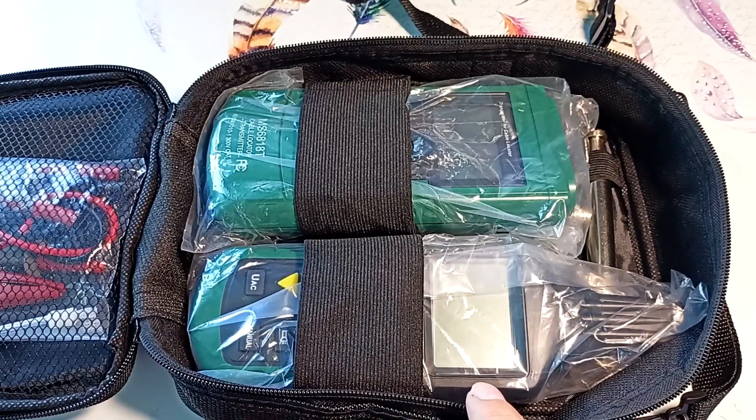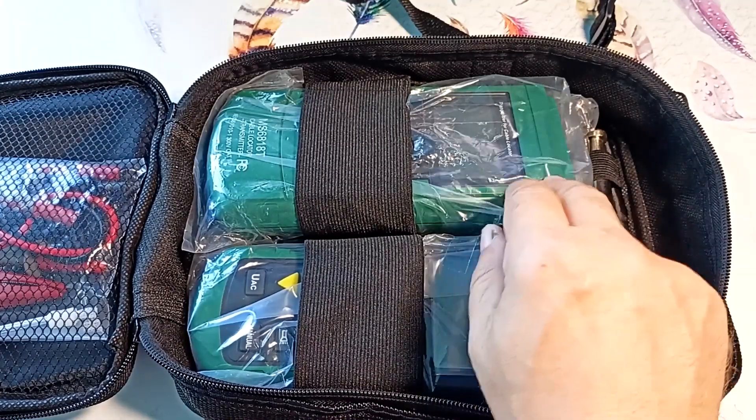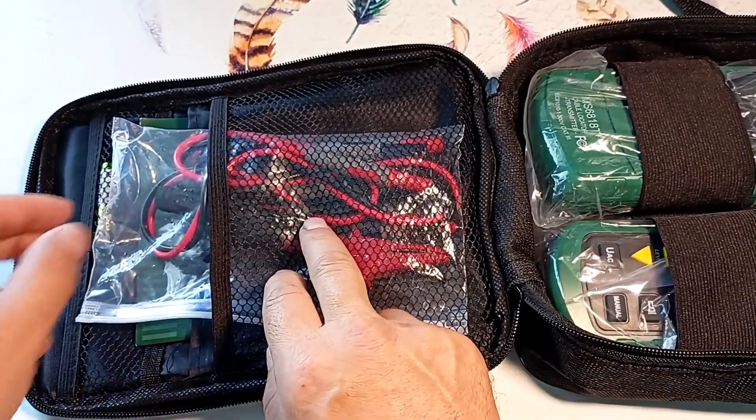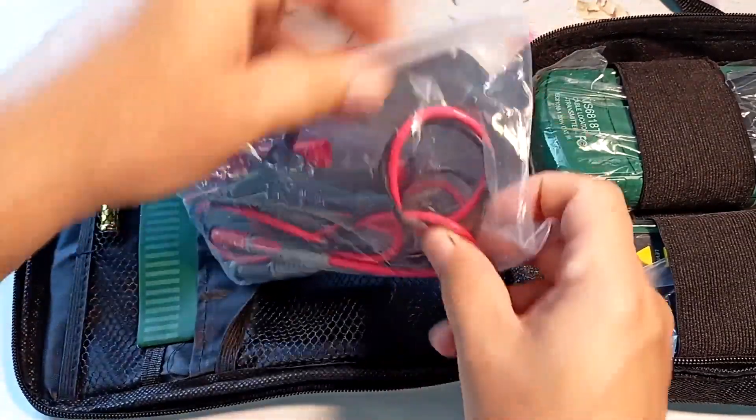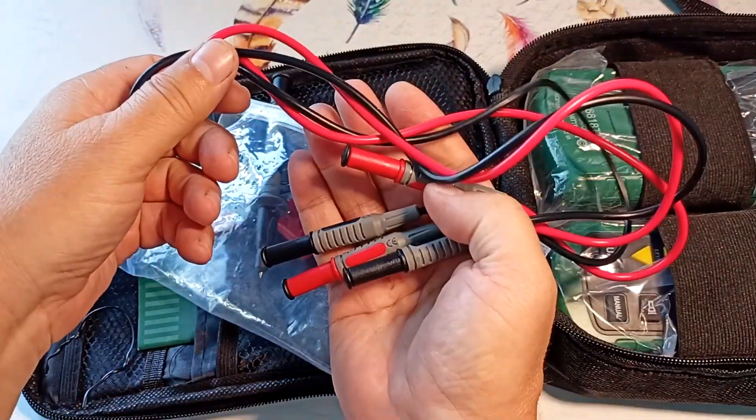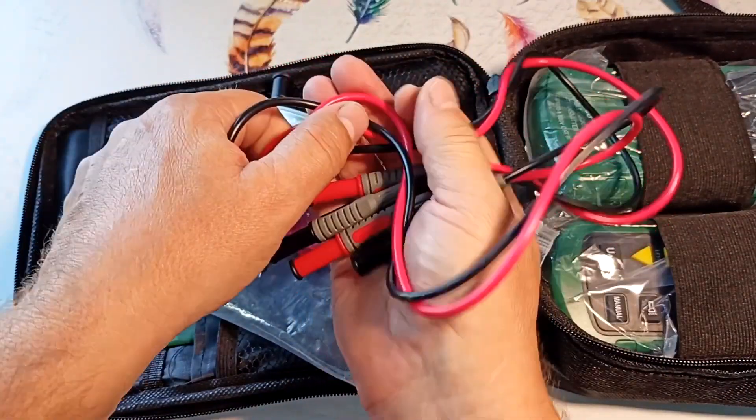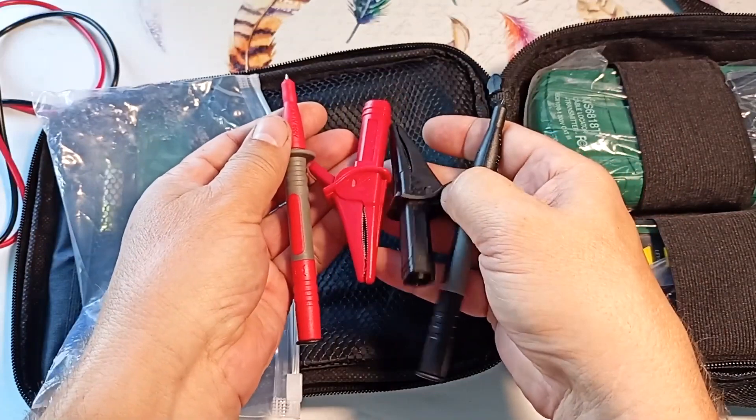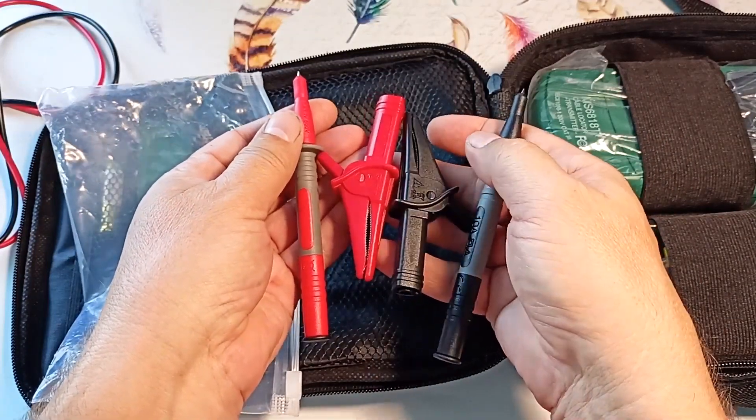It contains both devices, a receiver and a generator. Wires included. Let's look at them. Here is the wire itself, which at one end is connected to the generator.